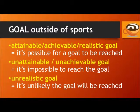If a goal is attainable, achievable, or realistic, it means it's possible for that goal to be reached. But if you describe it as an unattainable or unachievable goal, you're saying it's impossible to reach that goal. You can also say the goal is unrealistic, which means it's possible, but unlikely, that the goal will be reached.